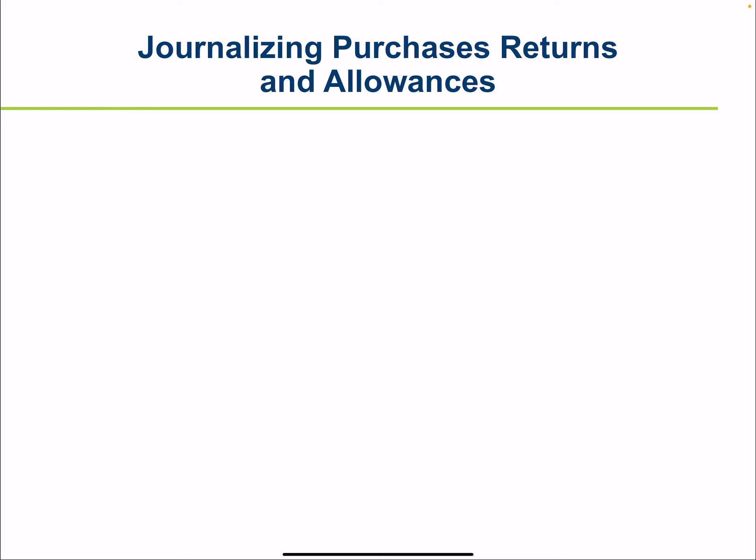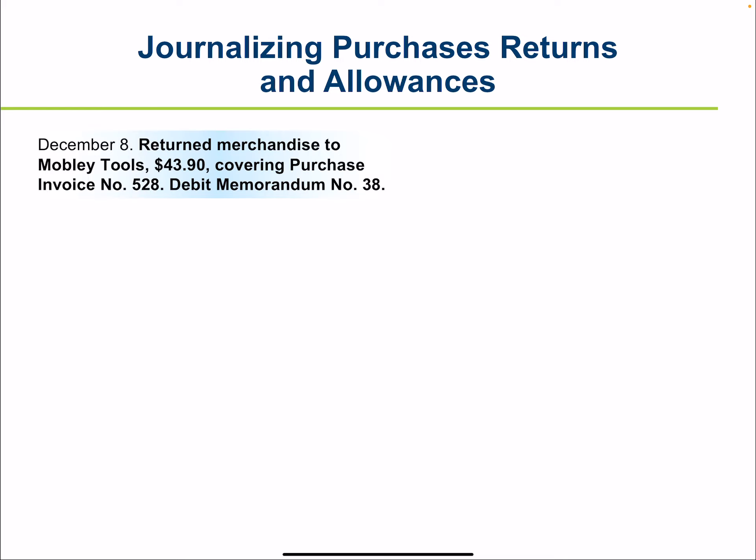Here is an example of journalizing a purchase return and allowance. Return merchandise to Mobley Tools, $43, covering a purchase invoice of $528, and a debit memorandum is prepared. The purchase invoice shows that you purchased that merchandise and are returning part of it.